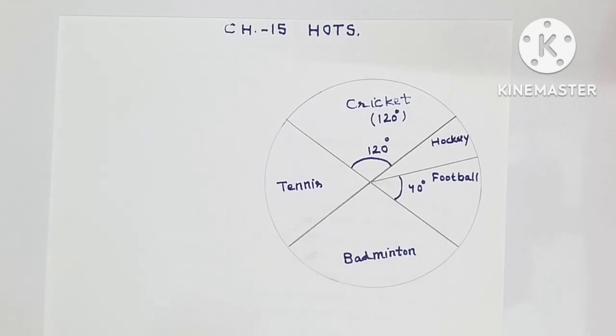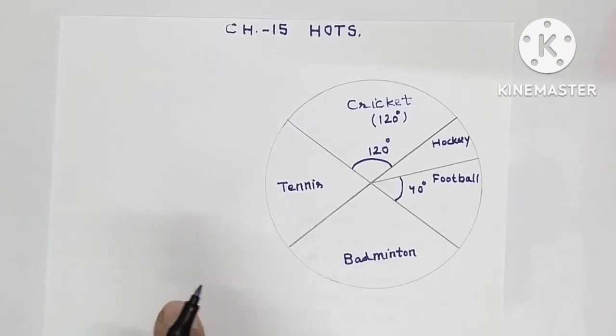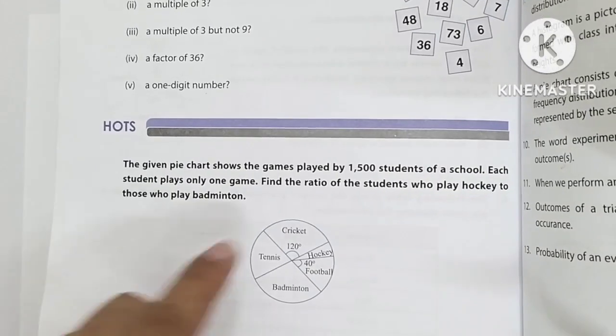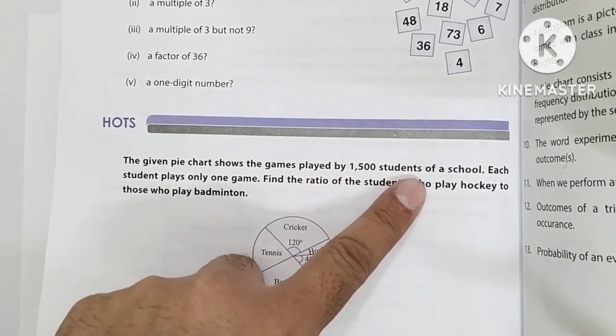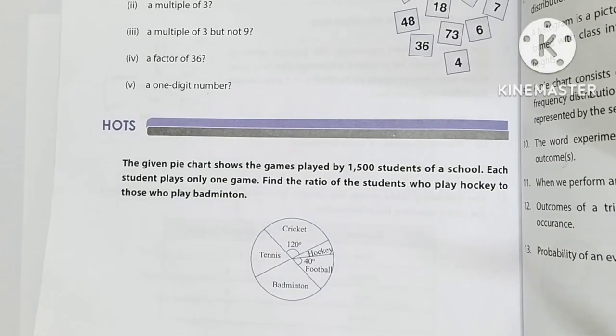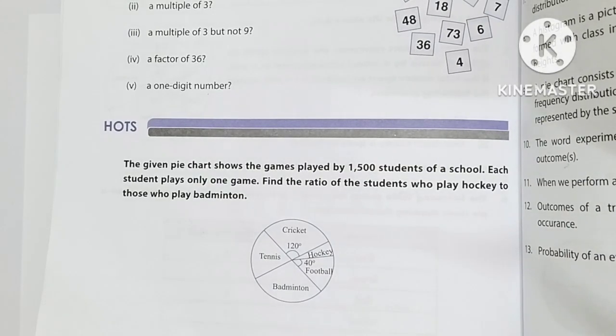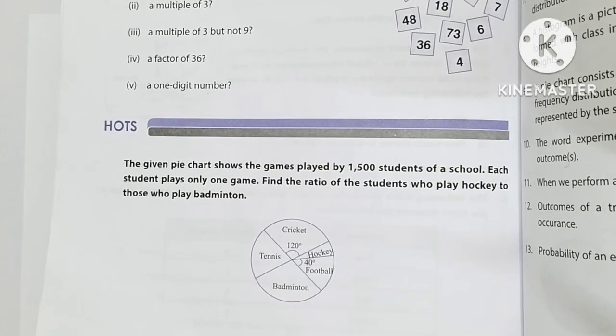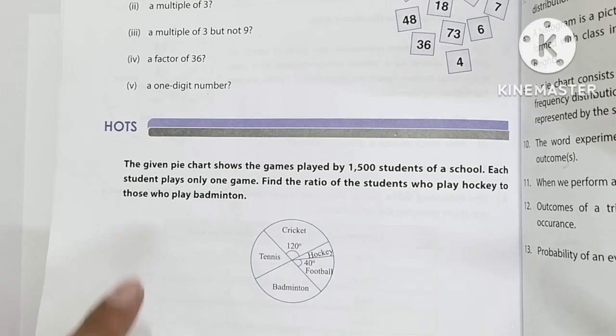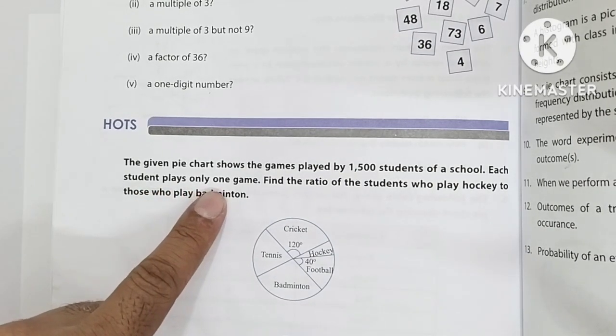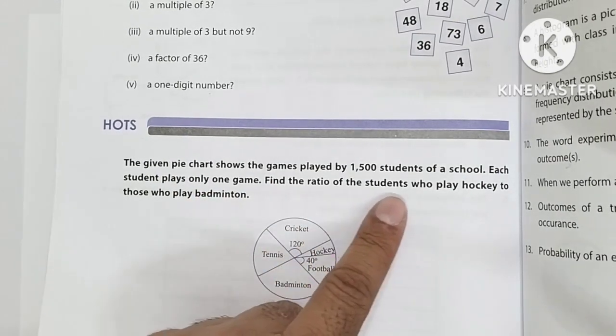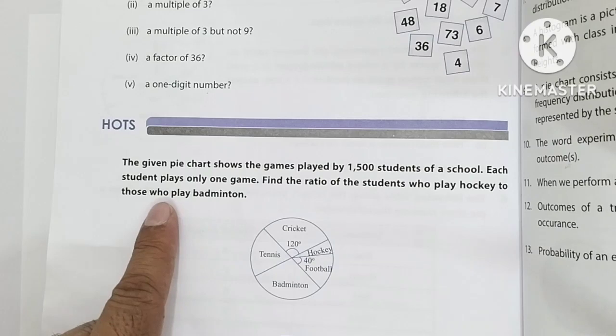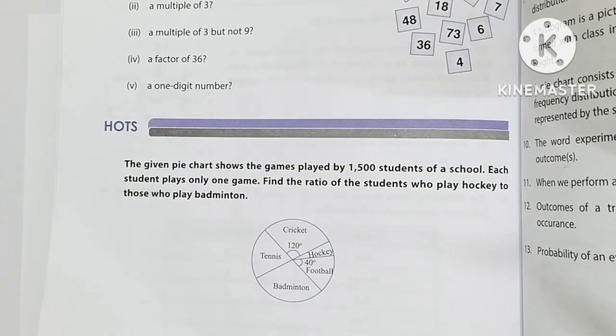The question is the given pie chart shows the games played by 1500 students of a school. Each student plays only one game. Find the ratio of the students who play hockey to those who play badminton.